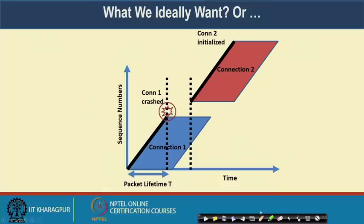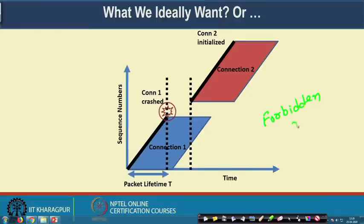In the next class we will look into the details of how to design a mechanism for selecting the initial sequence number so that overlapping of the forbidden zones for two different connections can be avoided. See you all in the next class. Thank you.